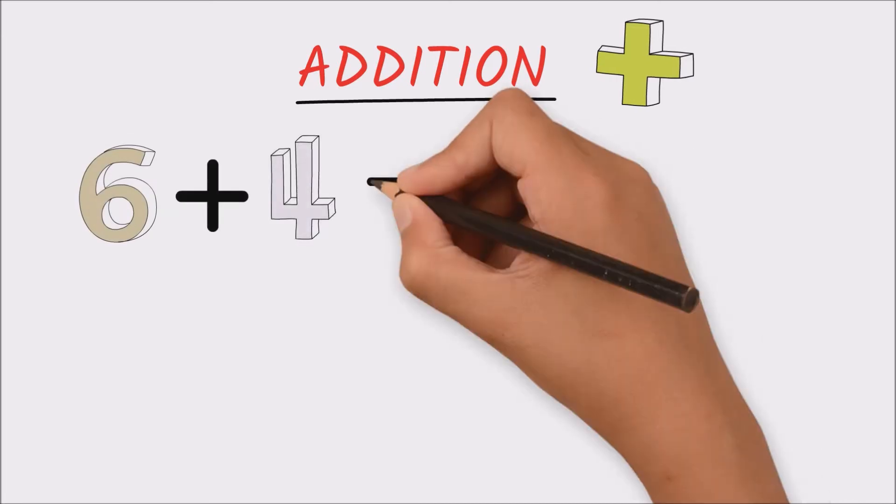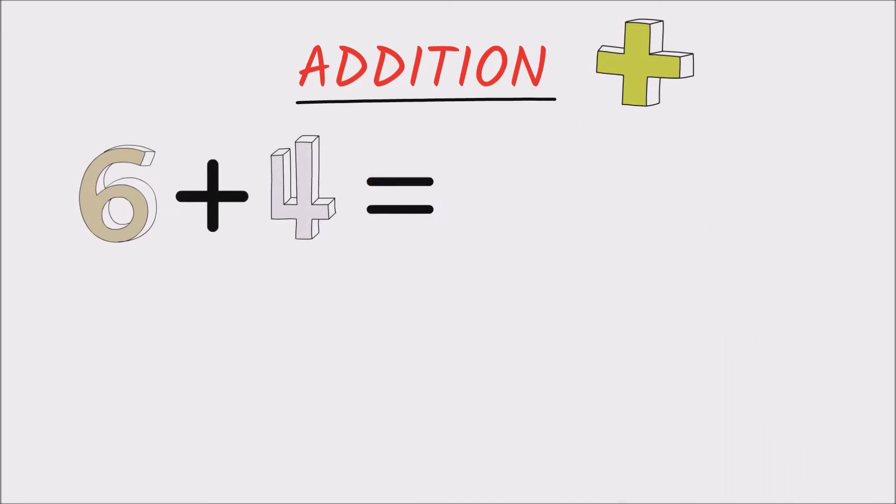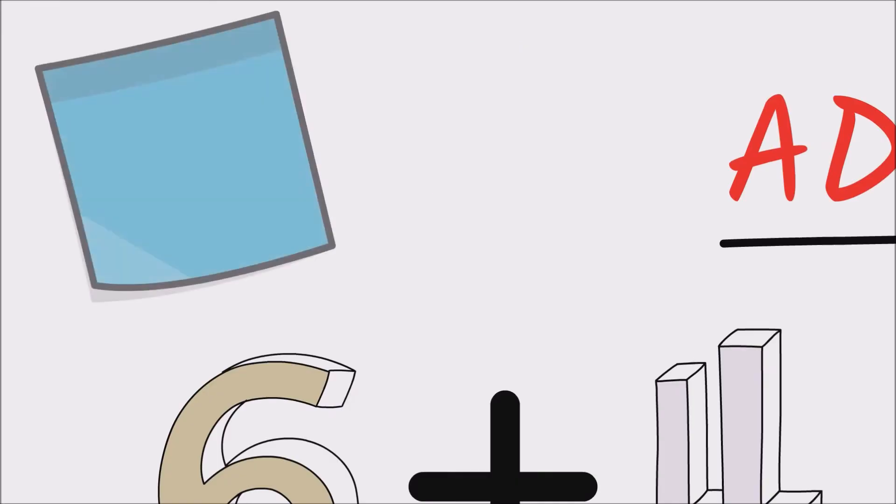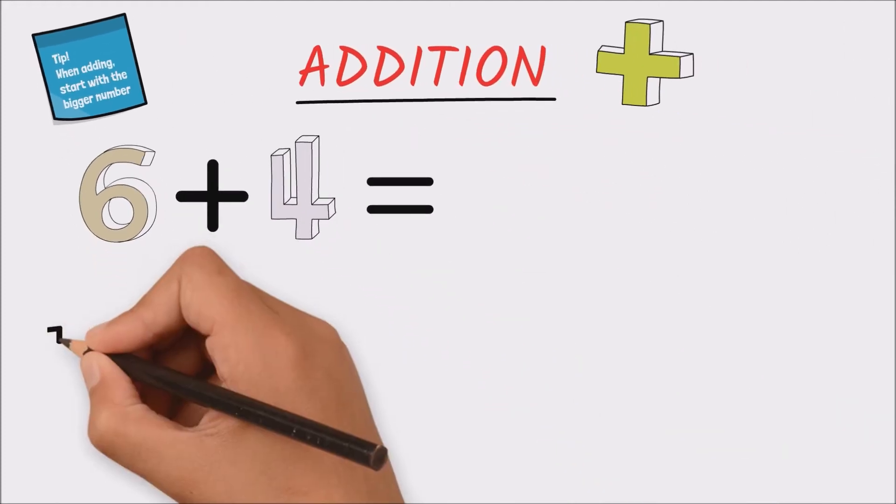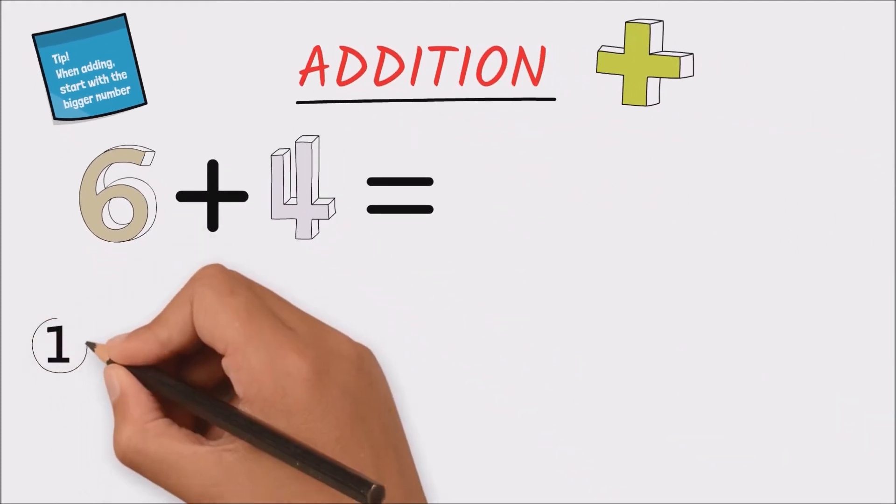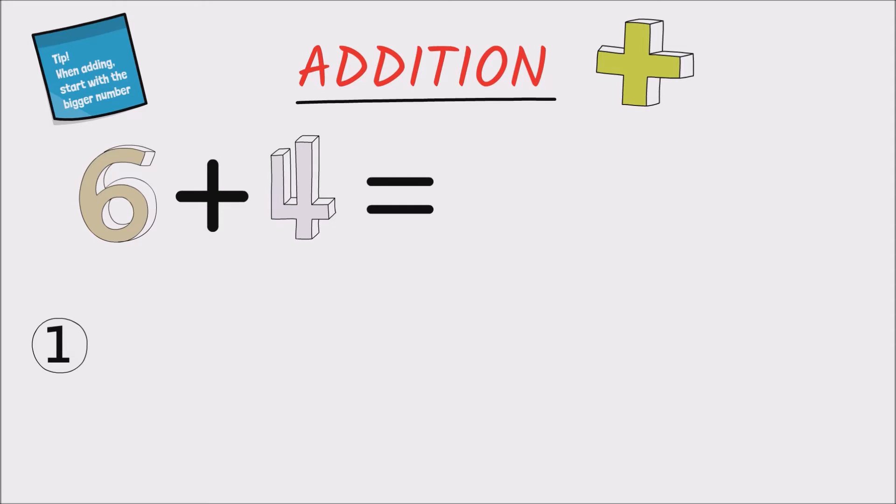We want to find out the sum of six and four, and there are many ways to do that. Here are three different methods, but a good tip is that when adding we always start with the bigger number first. So the first step is by using our fingers. We start with the bigger number, so we put up six fingers to represent the six mangoes that Miss Williams gave to Shanice.